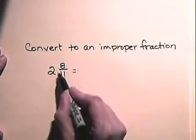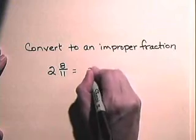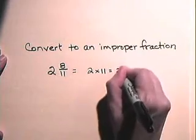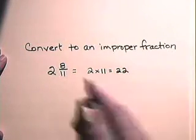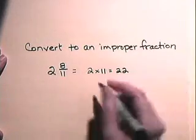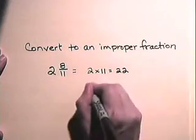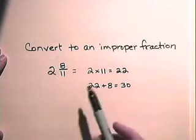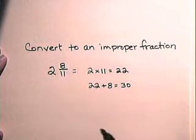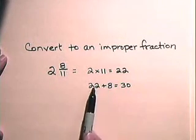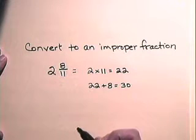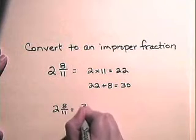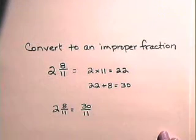So we multiply eleven times two, which is twenty-two, and we add the numerator, which is eight. We add the eight to the twenty-two. This mixed number two and eight-elevenths becomes twenty-two elevenths plus eight-elevenths, which is thirty-elevenths. So two and eight-elevenths as a mixed number is thirty-elevenths as an improper fraction.